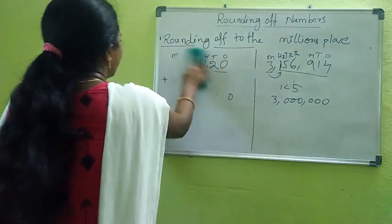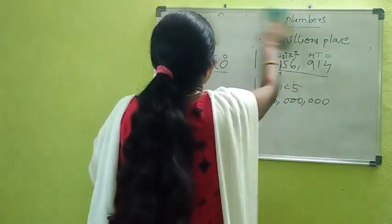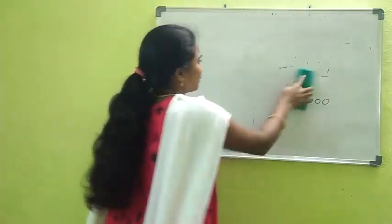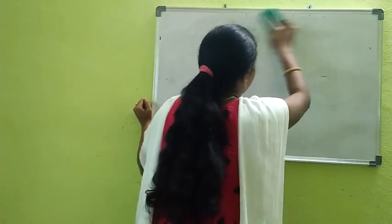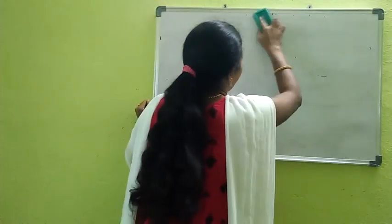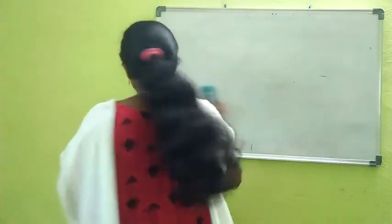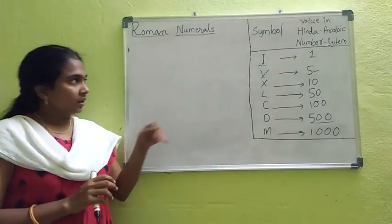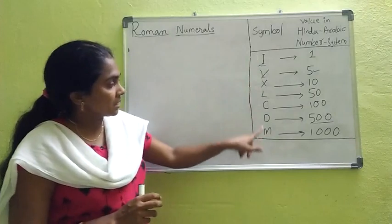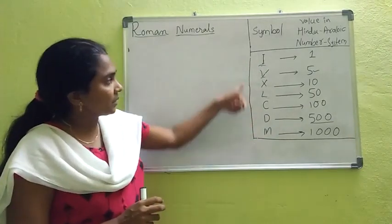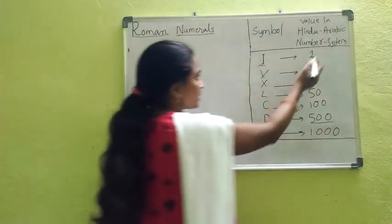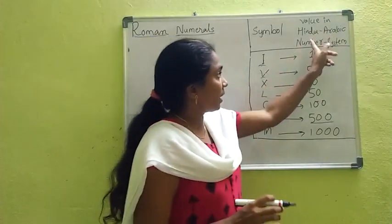Next concept: Roman numerals. This is also a familiar topic. We will learn the rules for writing Roman numerals. In Roman numerals we have seven symbols: I, V, X, L, C, D, M. These are the Hindu-Arabic number system values.